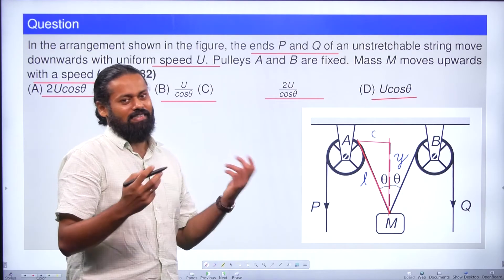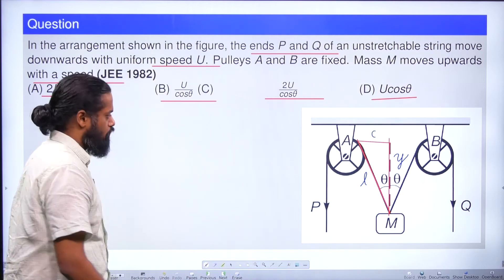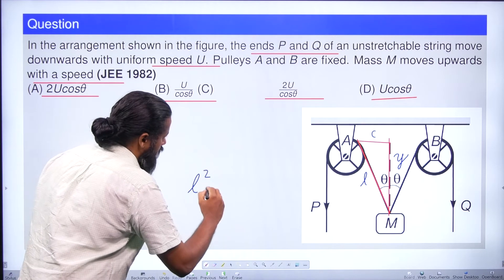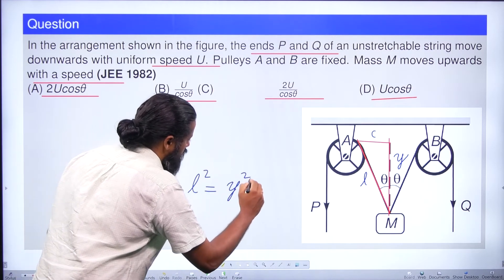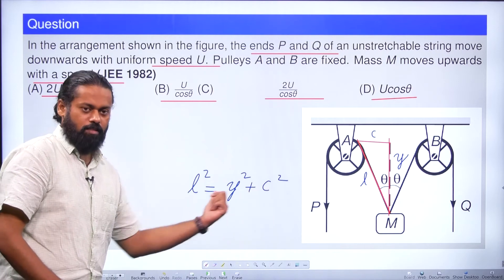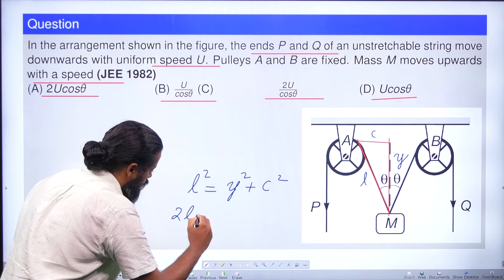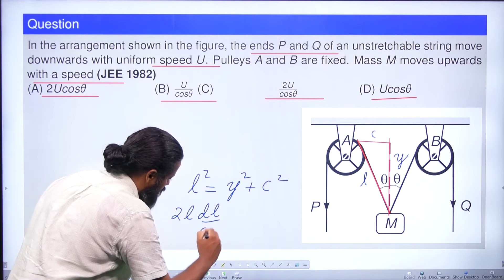Now we can solve this problem with a little bit of calculus and trigonometry. First of all, we can write down the Pythagoras relationship here: l² = y² + c². We can take the derivative of this equation with respect to time. The derivative of the left hand side will be 2l × dl/dt.